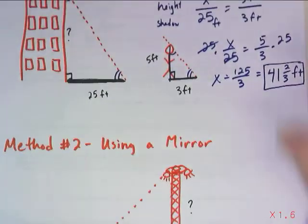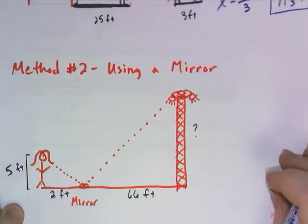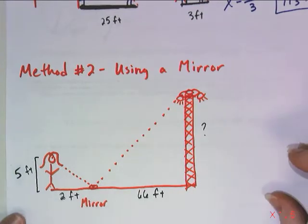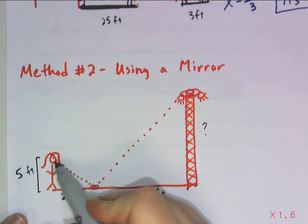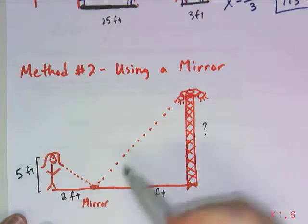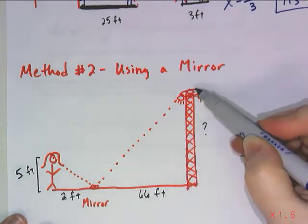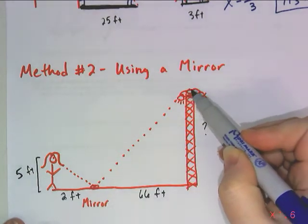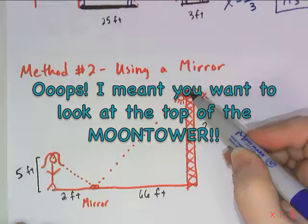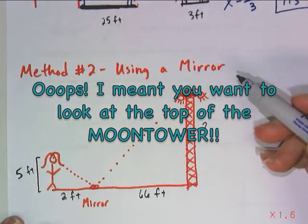A second method of indirect measurement involves using a mirror. So this time I have a female person standing up, and here on the ground, she is looking into a mirror, and what she sees in the mirror is the very top of what I tried to represent, which is a moon tower, just like the one across from the school, just across the street. So big tall tower with some lights up here at the top. You want to be looking at the exact top of the mirror. Because by doing that, we are creating similar triangles.